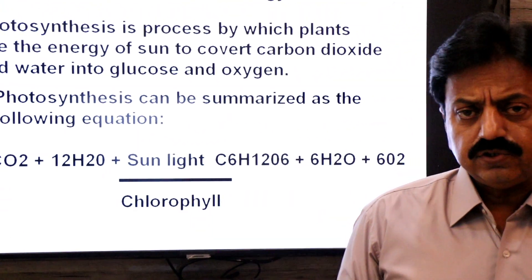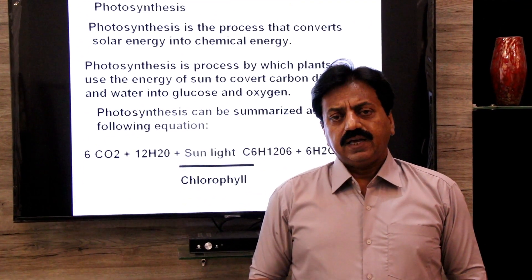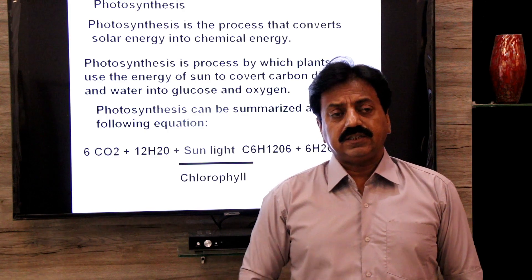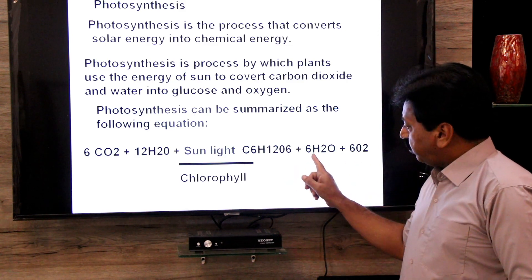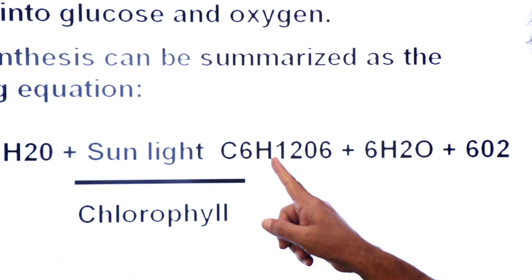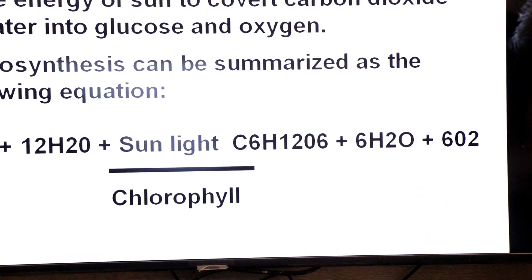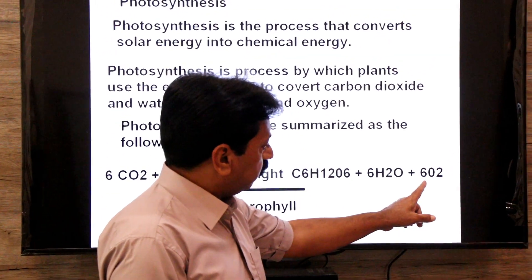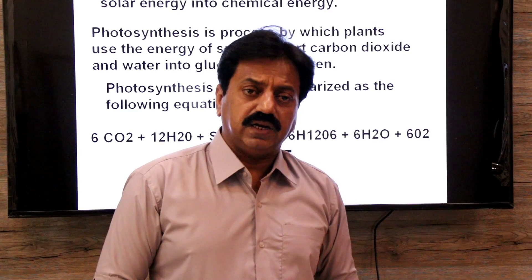Photosynthesis has two main reactions. The first is a light-dependent reaction, called the light reaction. The second is a light-independent reaction, called the dark reaction. Glucose and water are produced in the dark reaction, while the six molecules of oxygen come from the light reaction, specifically from the photolysis of water.